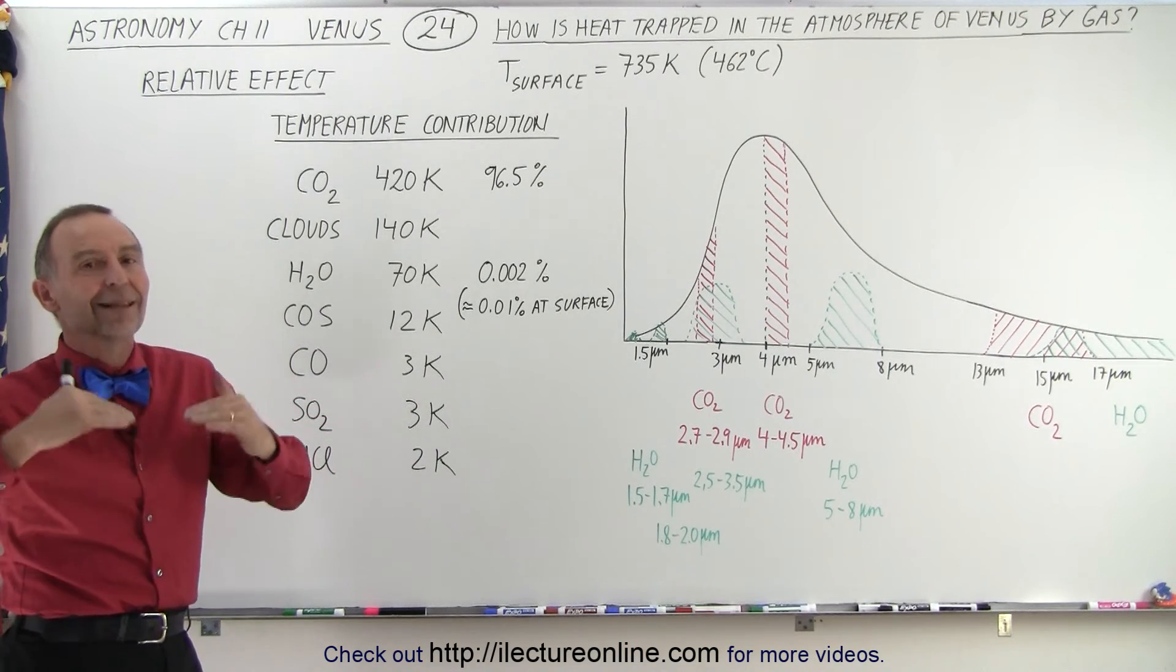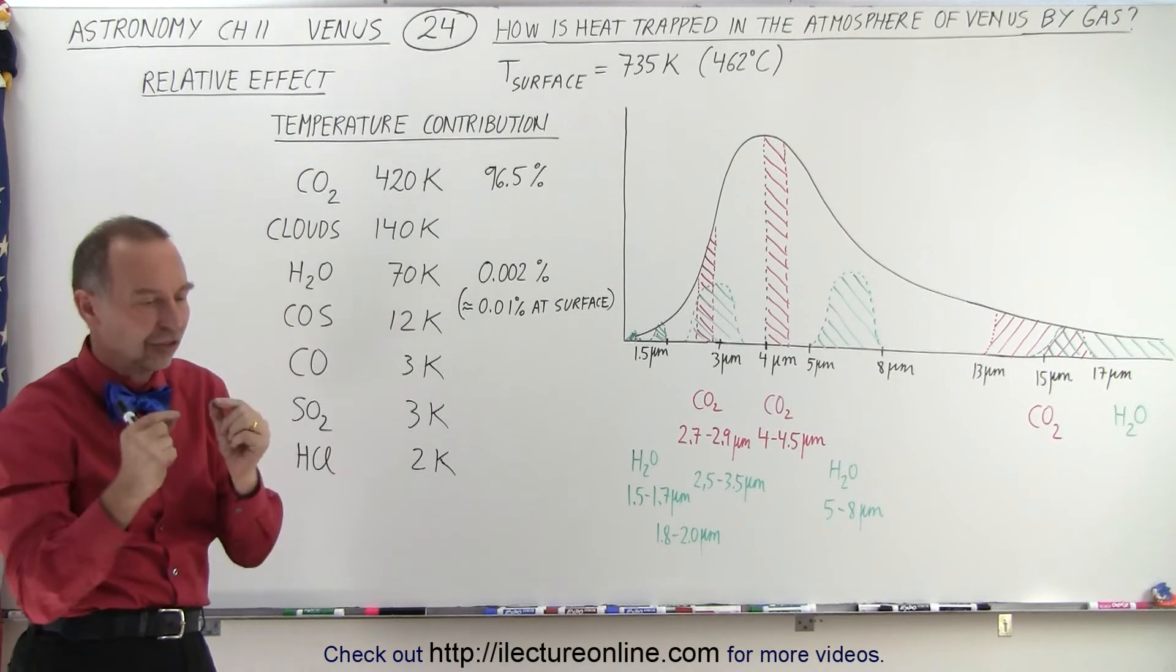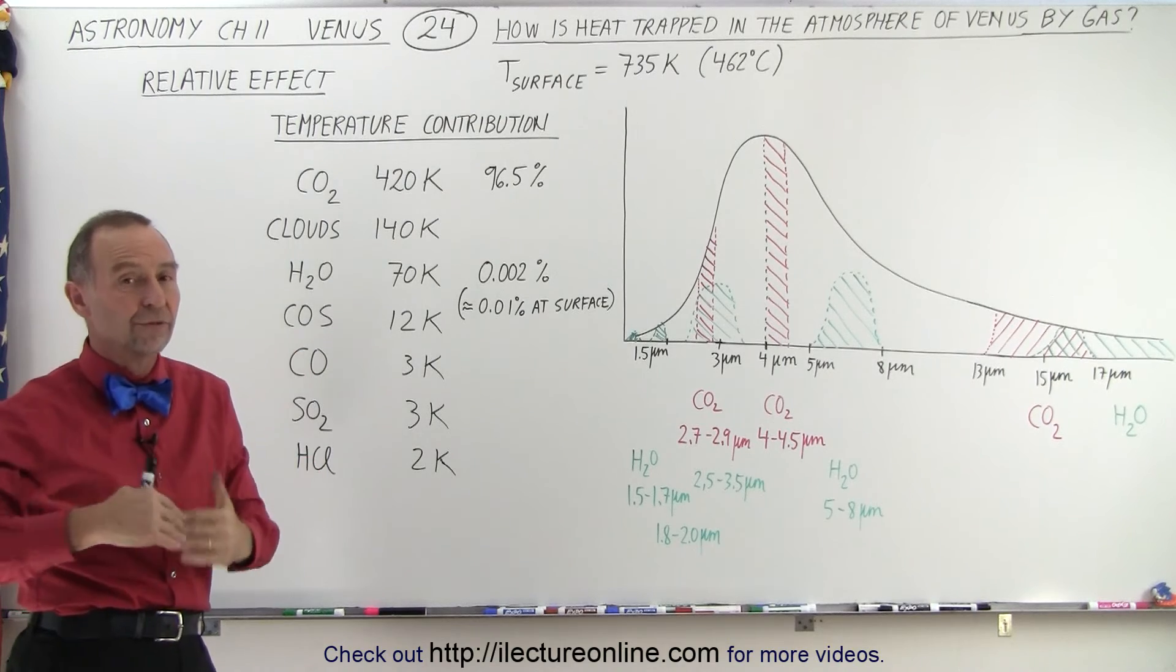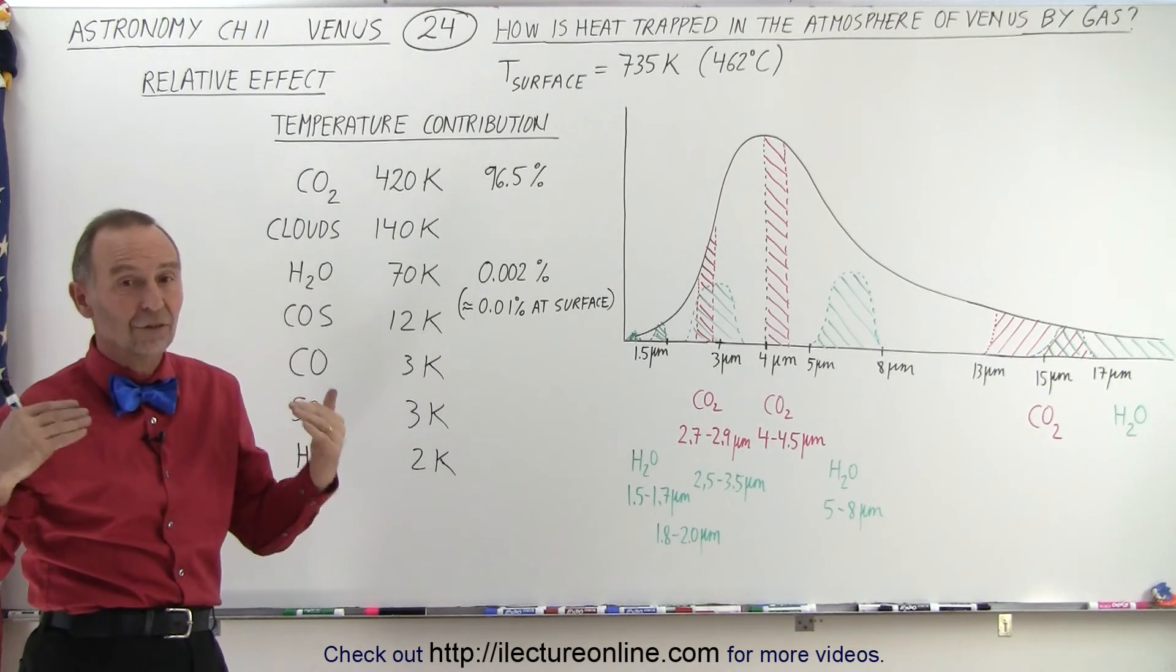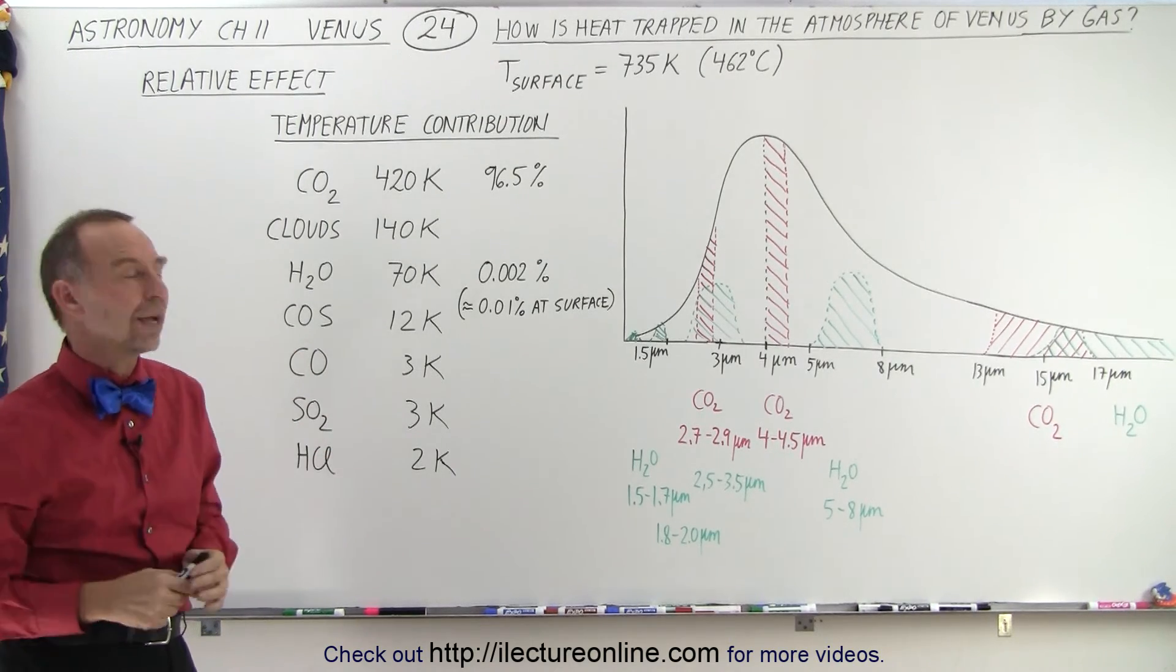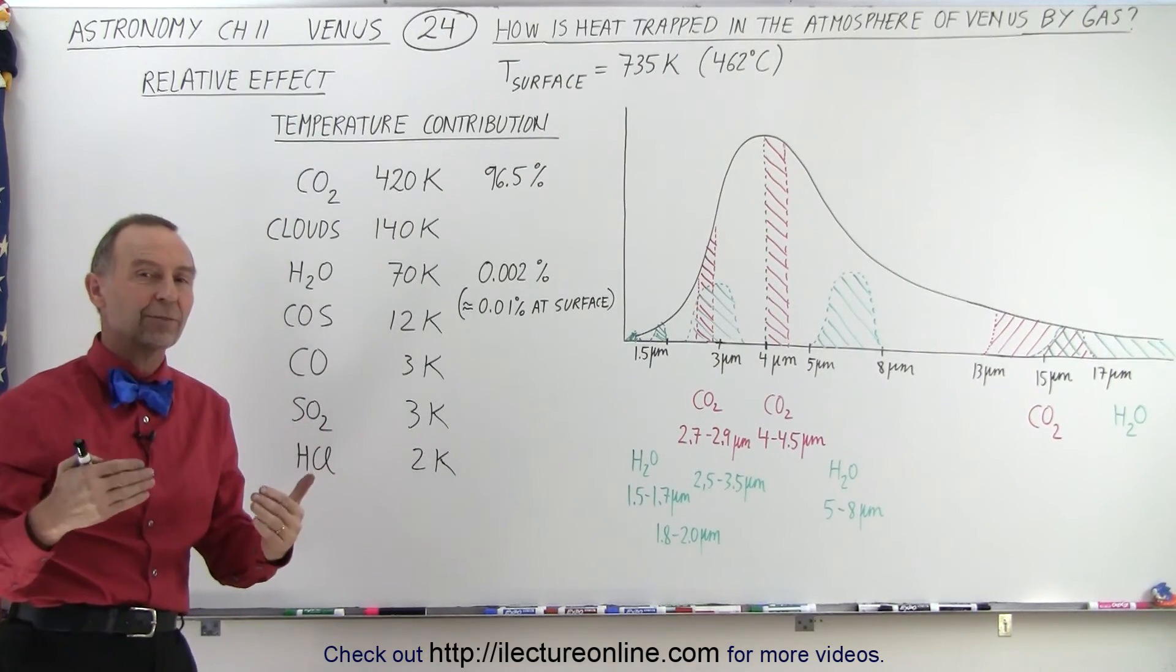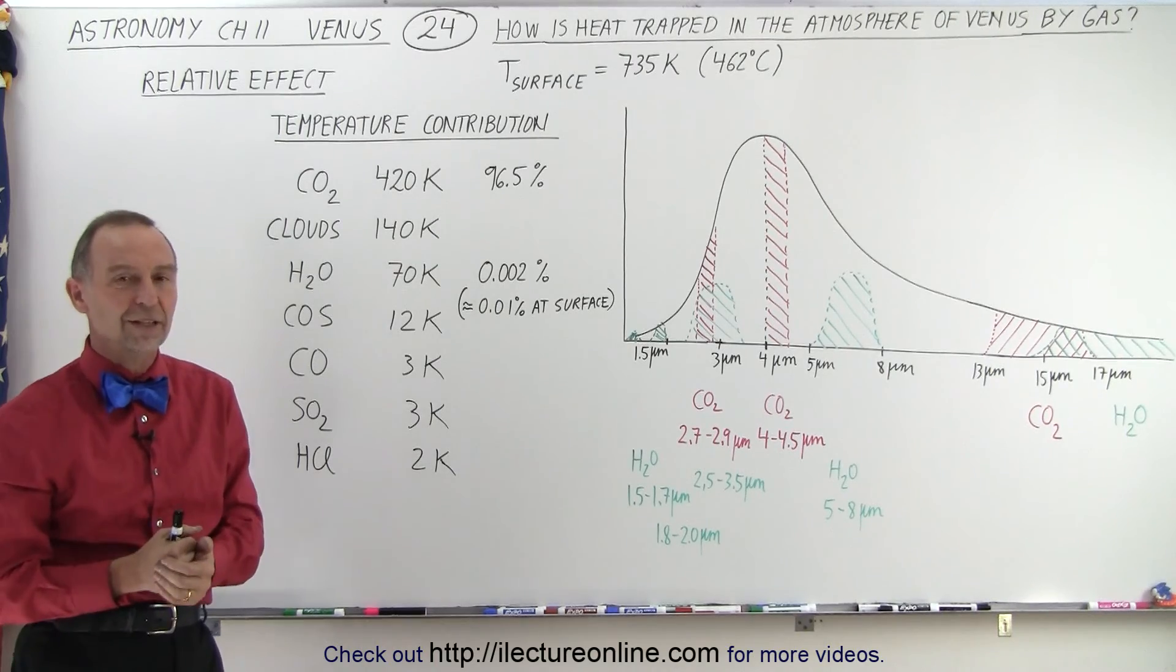So again, it's the delay effect of getting the heat back in the atmosphere. It just takes such an enormous amount of time to make it through that very thick atmosphere before it can make it back to space that the surface temperature is so high. And this is then the relative contribution of those aspects of the atmosphere to that greenhouse effect.